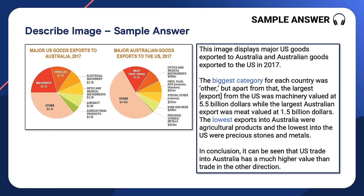How was that one? Did you find it easier or harder? Let's listen to a sample answer. This image displays major U.S. goods exported to Australia and Australian goods exported to the U.S. in 2017. The biggest category for each country was 'other', but apart from that, the largest export from the U.S. was machinery valued at $5.5 billion, while the largest Australian export was meat valued at $1.5 billion. The lowest exports into Australia were agricultural products, and the lowest into the U.S. were precious stones and metals. In conclusion, it can be seen that U.S. trade into Australia has a much higher value than the trade in the other direction.